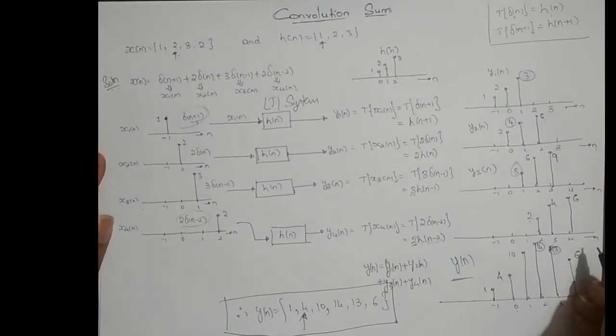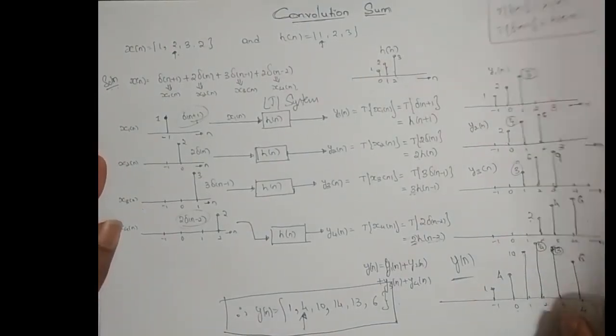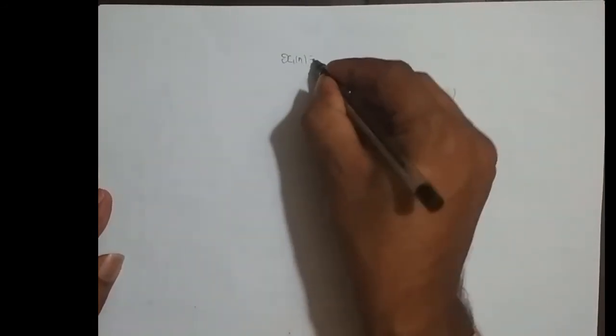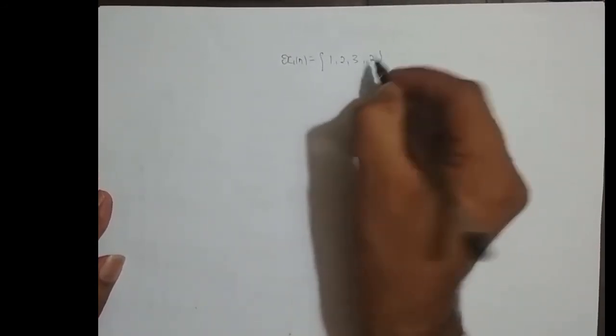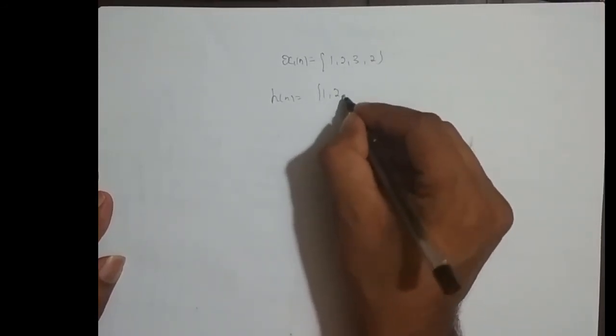A system which satisfies linearity and the time-shift property is called an LTI system. Now, let me give you an easy method to cross-check this result. What was our input sequence x(n)? It was [1, 2, 3, 2] with n=0 at 2. And what was h(n)? It was [1, 2, 3].